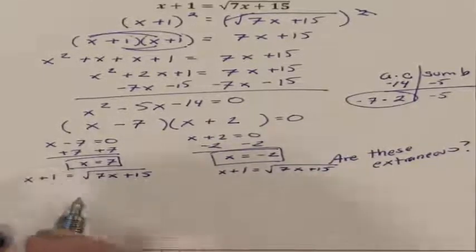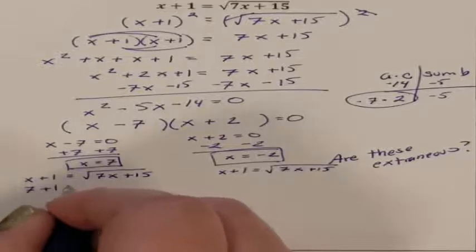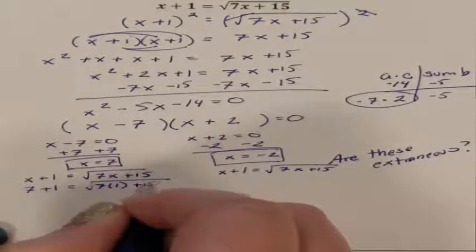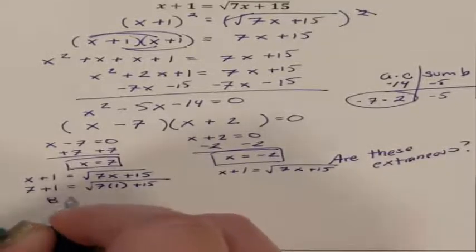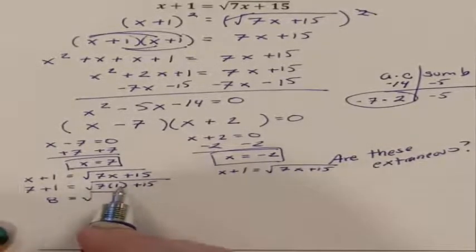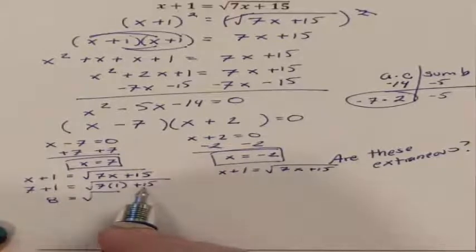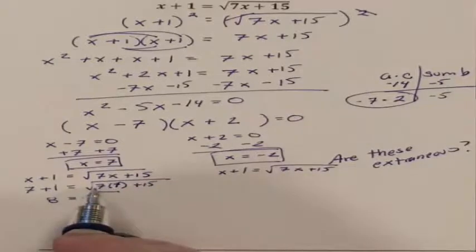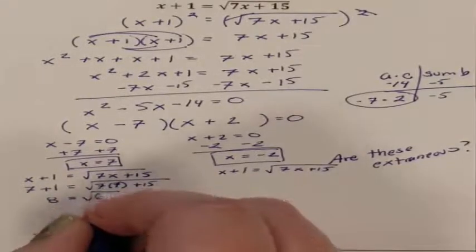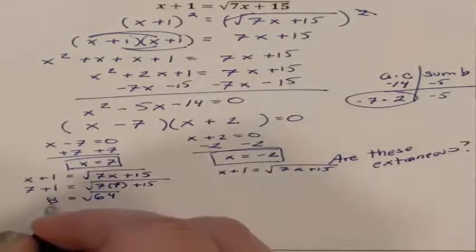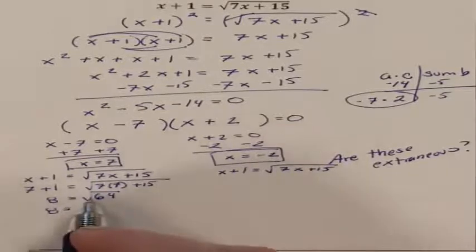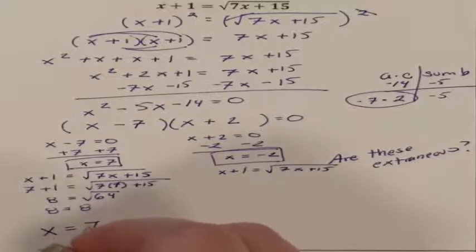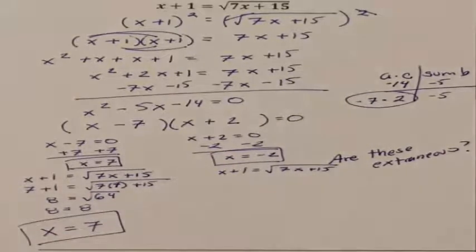So replacing x with 7, that's 7 plus 1 equaling the square root of 7 times 7 plus 15. 7 plus 1 is 8, equaling the square root of 49 plus 15, which is 64. 8 is supposed to equal, what is the square root of 64? The square root of 64 is 8. So we know that x equals 7 does check out. It is an answer.